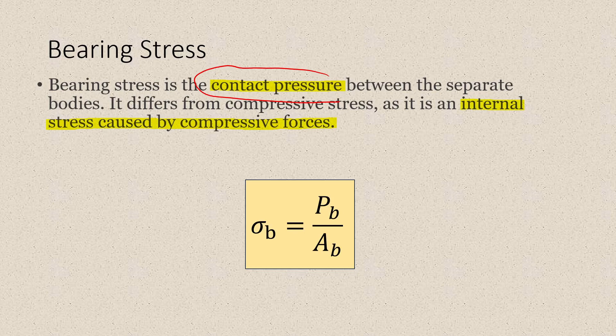The bearing stress is denoted by sigma_b which is equal to the bearing force divided by the bearing area. This is essentially just force over area but we are adding the subscript b to signify bearing.